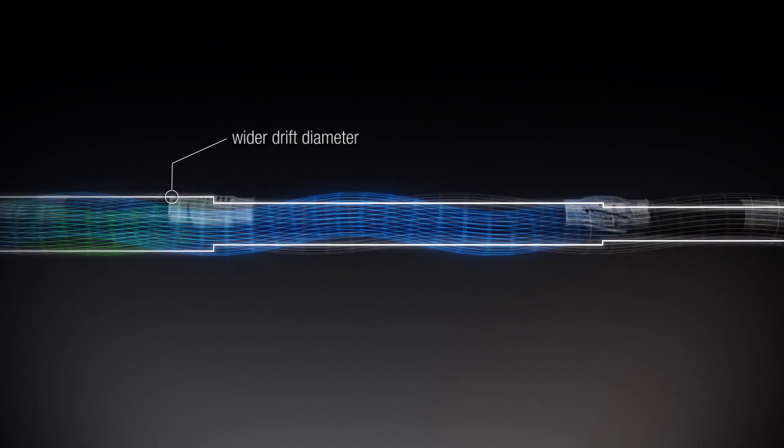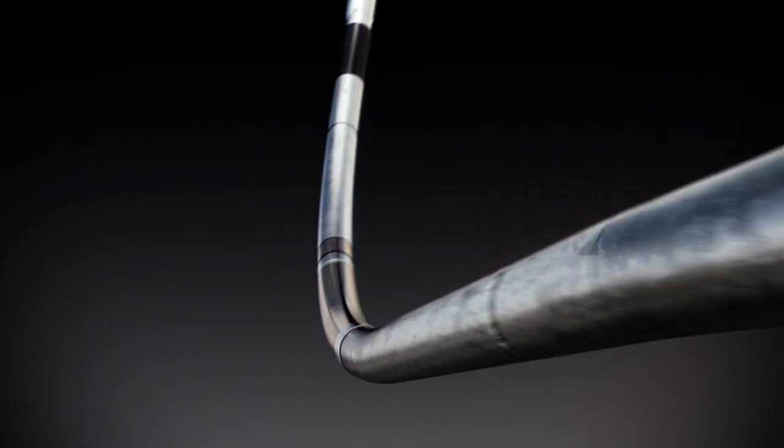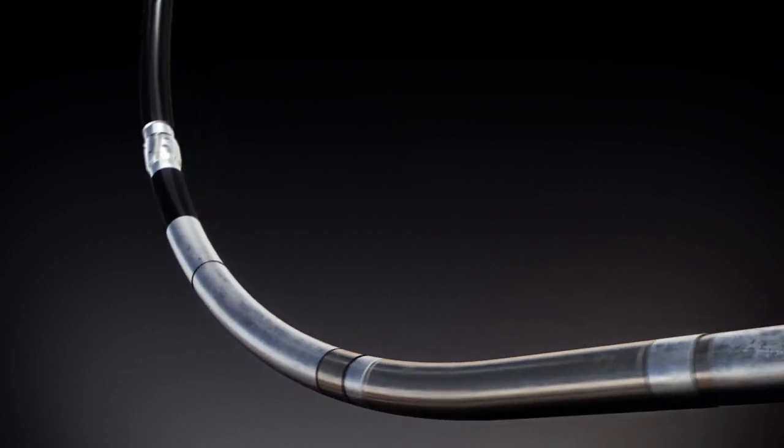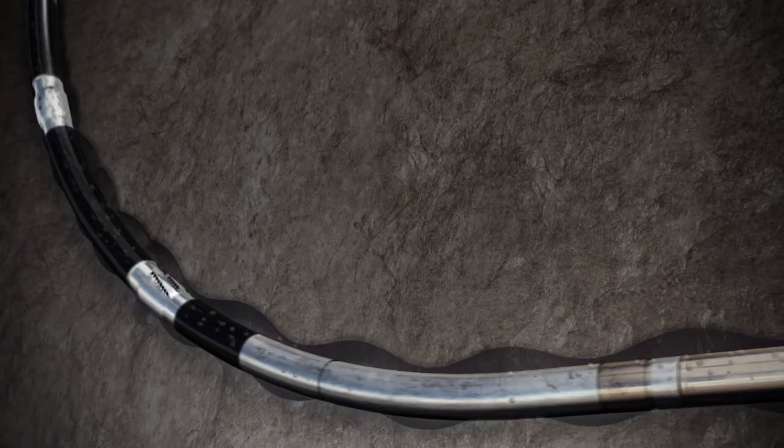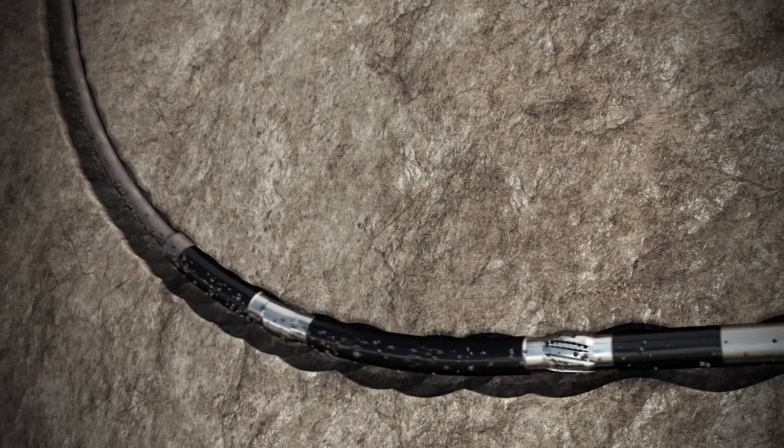Creating a wellbore that doesn't choke the drill string. The same effect occurs at doglegs or rotate and slide ledges. Drill-N-Ream reduces the chance of ledge collisions, decreasing the wear on tools as they pass by.